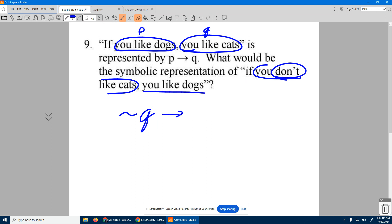You like dogs, so there's the implies, so not Q implies. So if you don't like cats, you like dogs. So where's the dog part? That's the P.